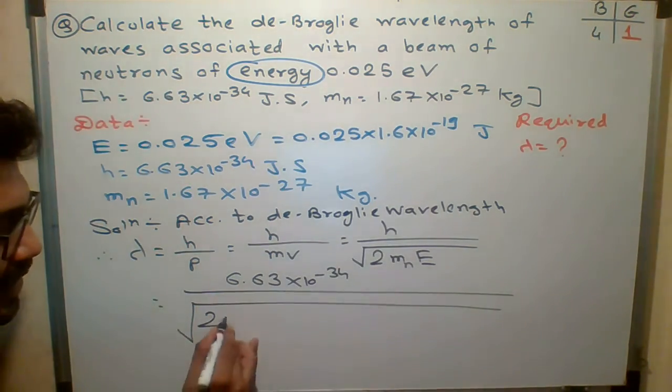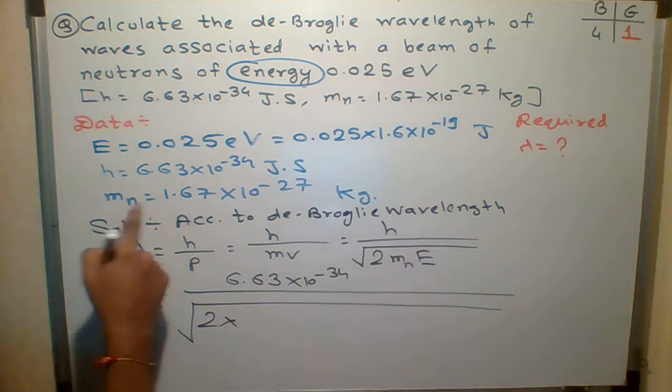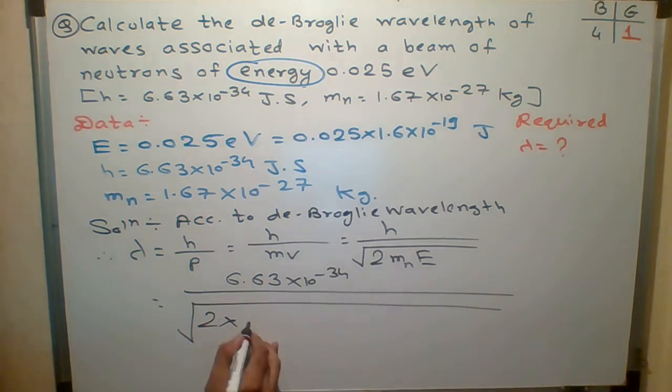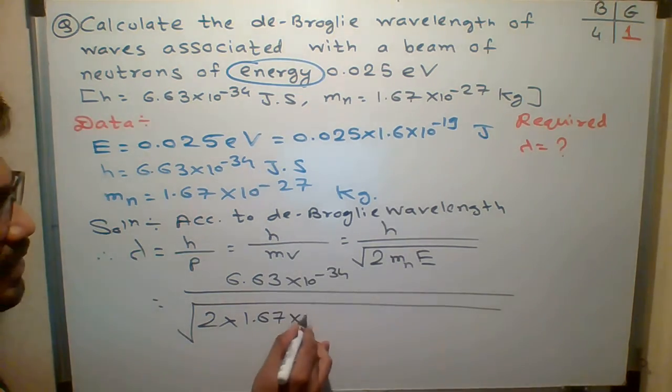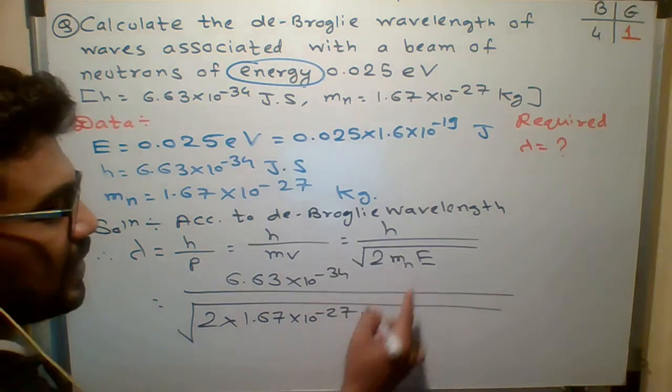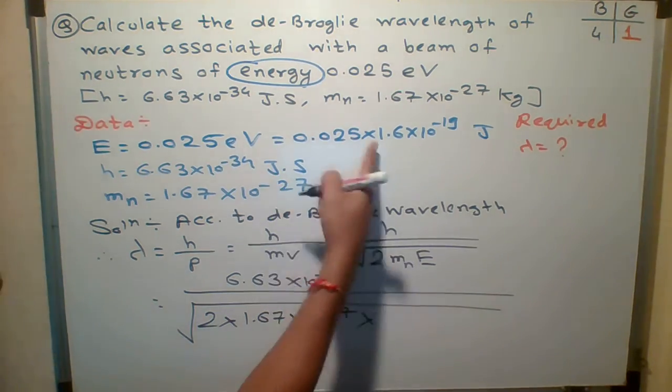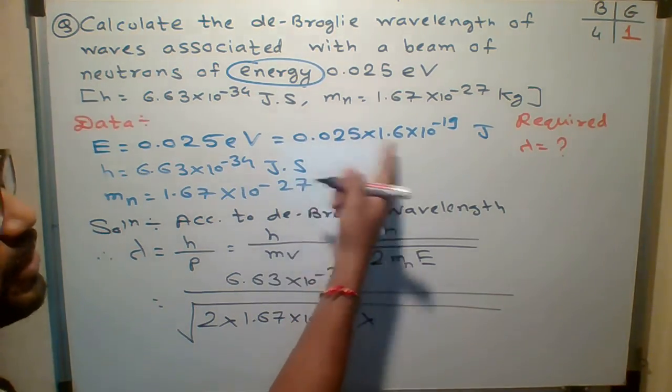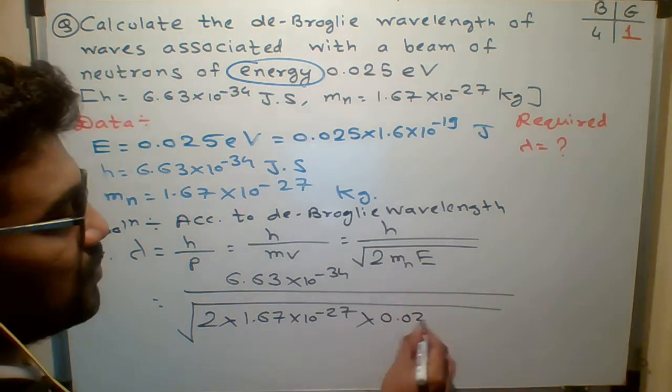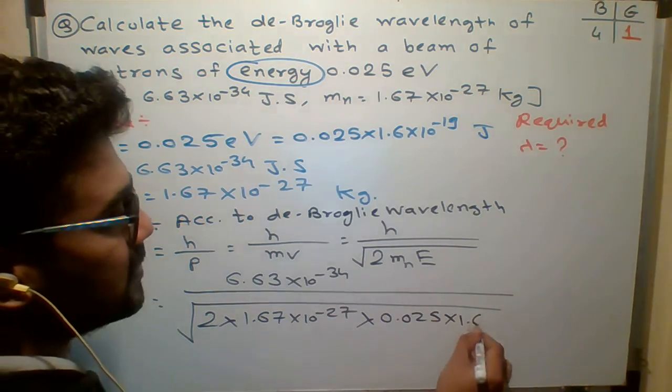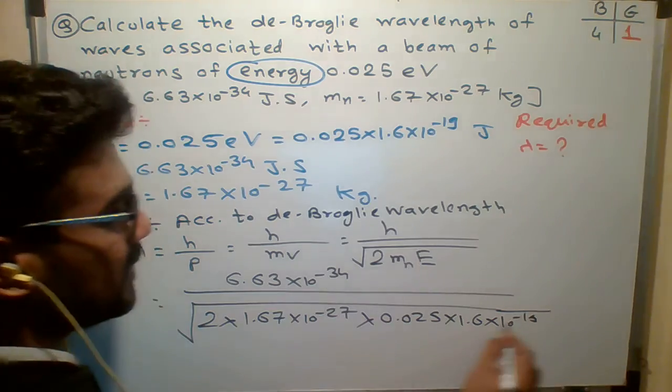Rishma, what is the next term? MN. What is MN stands for? Mass of neutron: 1.67 into 10 to the minus 27. Now the energy is given, students. So just simplify this particular term: 0.025 into 1.6 into 10 raise to minus 19.